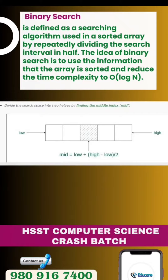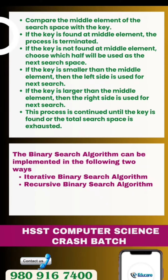This is how we do it: we divide the search space into equal halves, then find the middle element. The middle element is calculated as: low + (high - low) / 2. Then we compare the middle element of the search space with the key.